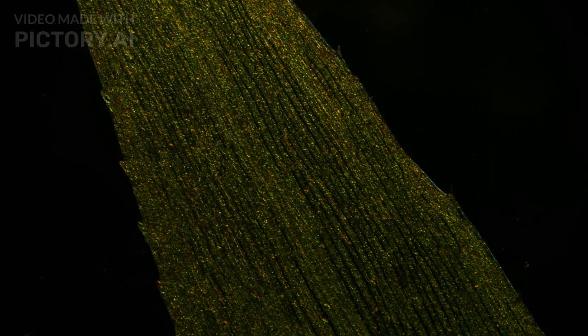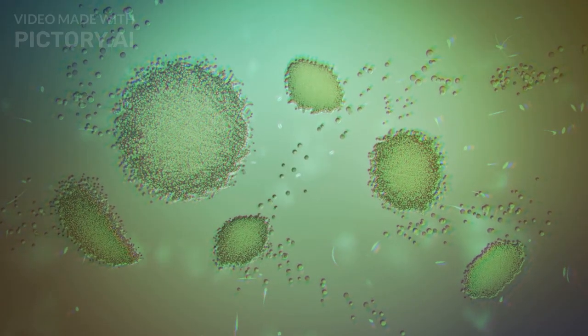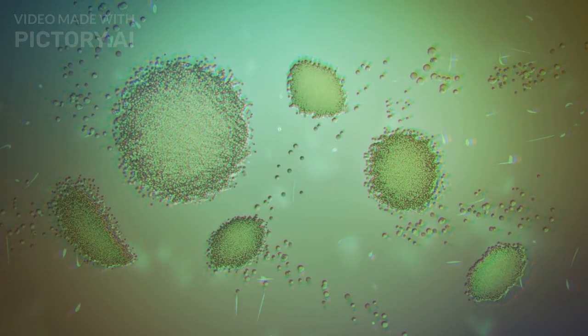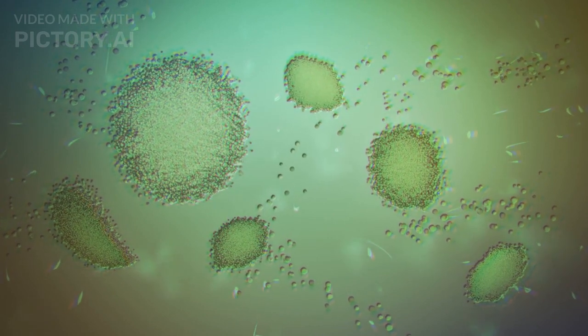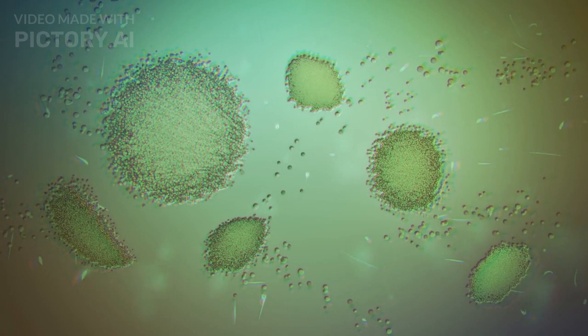Chloroplasts consist of double membrane layers and stacked thylakoids filled with chlorophyll. Chloroplasts are the solar panels of plant cells, capturing sunlight to produce energy through photosynthesis. Here, light energy is converted into chemical energy stored in glucose.